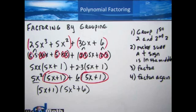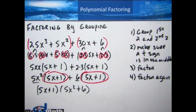We're continuing, as in the last section, to undo the distributive property — in this case undoing a binomial times a binomial. We're going to do many more examples in this section. It's a great idea to print out your coursework and work on it while watching so you can follow along and see how to do these as we go.